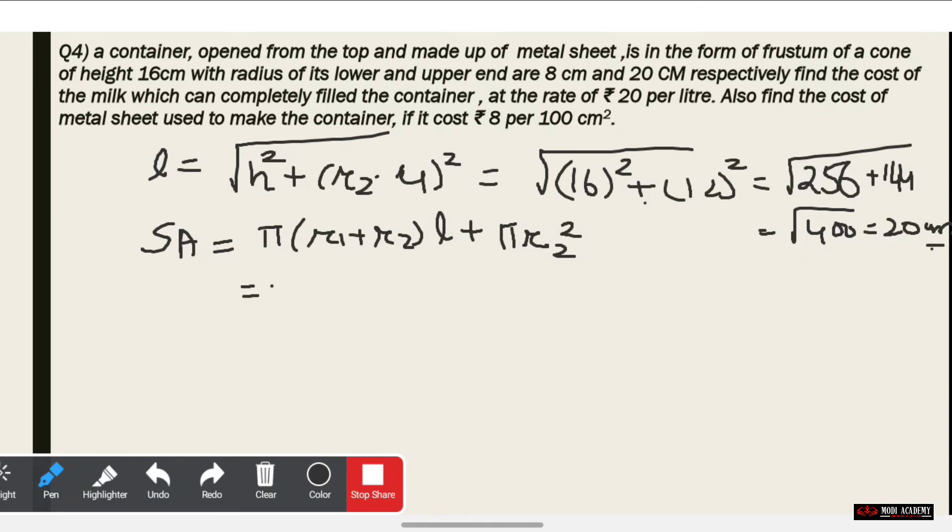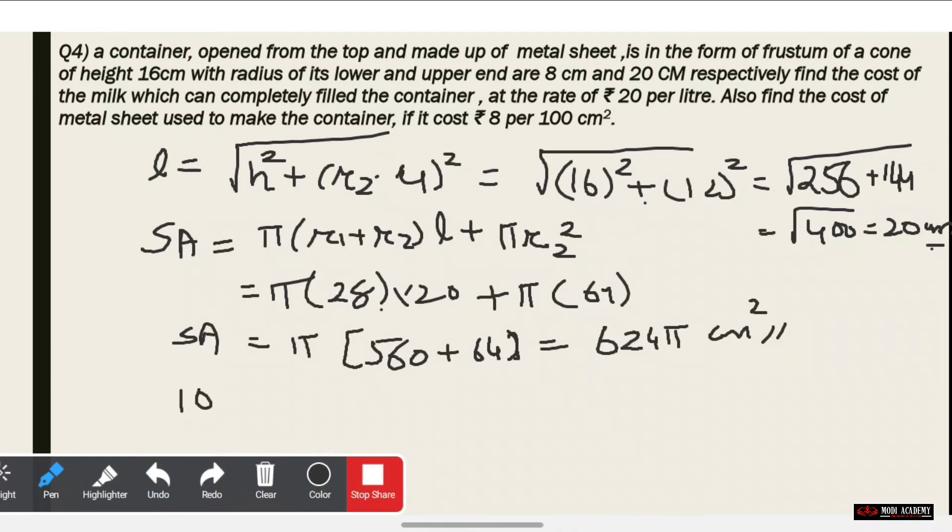L = √(16² + (20 - 8)²) = √(256 + 144) = √400 = 20 cm. So slant height equals 20 cm. Now the surface area equals π(r1 + r2)L + πr2². That's π(8 + 20) × 20 + π × 20² = π(28 × 20 + 400) = π(560 + 400) = 960π.